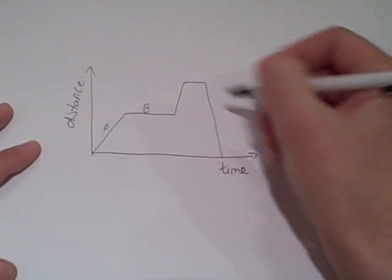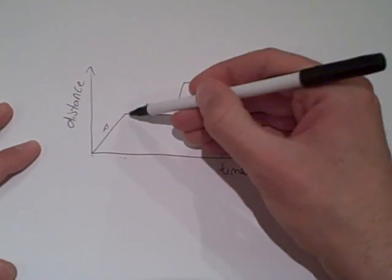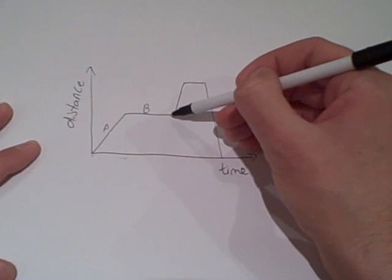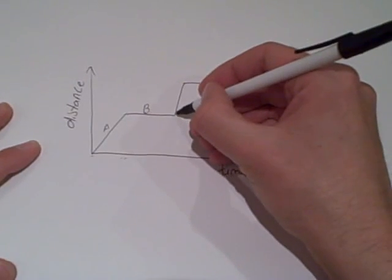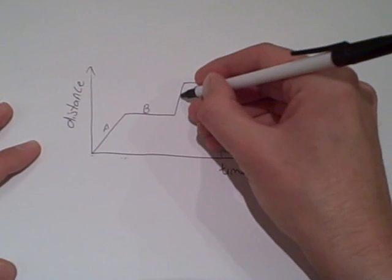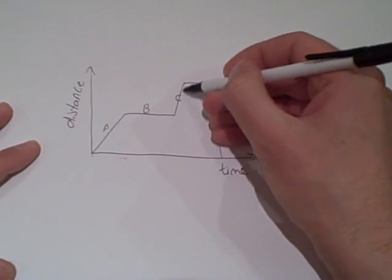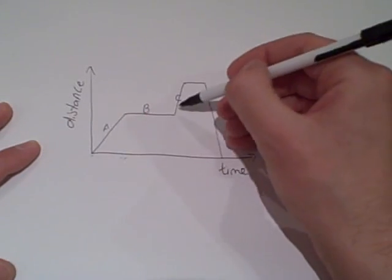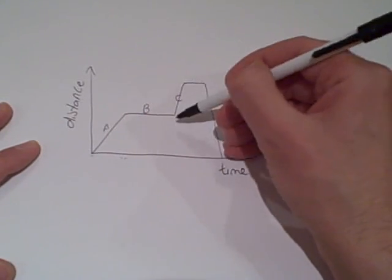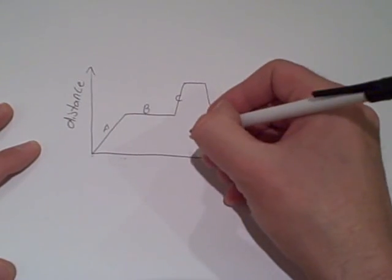In section B, as time passes, the distance isn't going up, so that would be stationary. Then in section C, once again as time passes, distance is going up — but you'll notice the gradient of the graph is steeper, and that tells us it's moving faster.